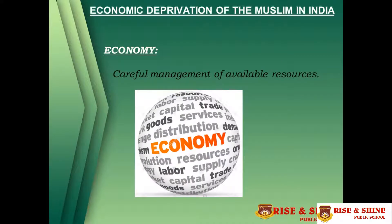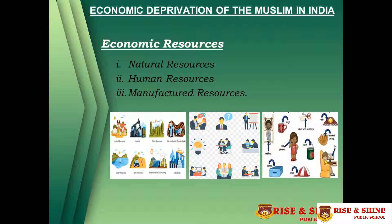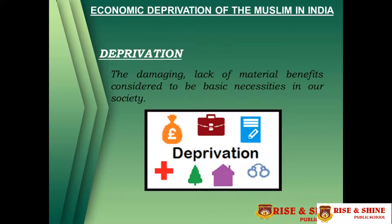Dear students, first of all, the question arises in our mind: what does 'economic' and 'deprivation' mean? Economy means the careful management of available resources. There are three basic resources: natural resources, human resources, and manufactured resources. Natural resources are related to the agriculture sector; human resources relate to the labor workforce; and manufactured resources mean goods and products manufactured in industries. Deprivation means the lack of material benefits considered to be basic necessities in society.